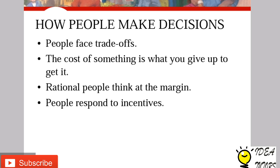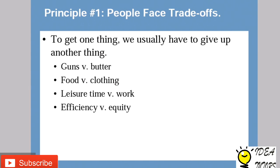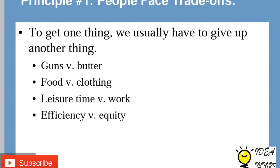The first principle is: people face trade-offs. To get one thing we usually have to give up another. Suppose in an economy we are producing guns versus butter. Since resources are limited, we have to choose how much of guns to produce and how much of butter, or which one to produce. We cannot get large quantities of both goods with given resources, so there is a trade-off.